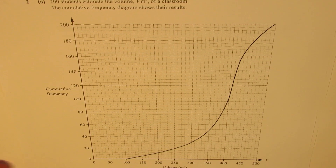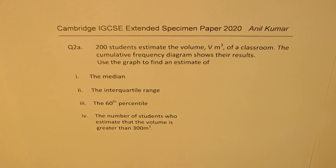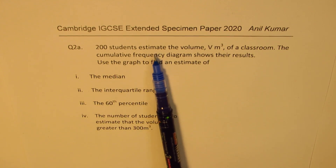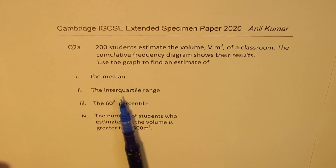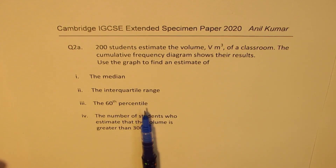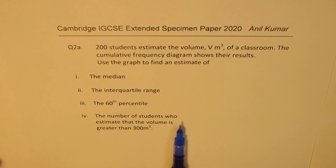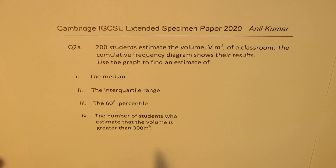The questions are: 200 students estimate the volume V meter cube of a classroom, and the cumulative frequency diagram shows the results. Use the graph to find an estimate of: the median, the interquartile range, the 60th percentile, and the number of students who estimate that the volume is greater than 300 meter cube.